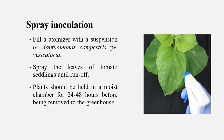The fourth is spray inoculation. We use an atomizer, fill it with the pathogen suspension, and spray it on the tomato seedling until run-off happens. Then we keep the plant in a moisture chamber for 24 to 48 hours.